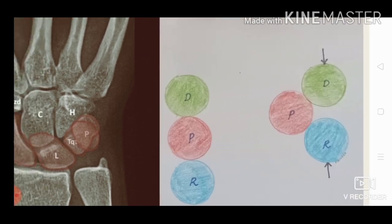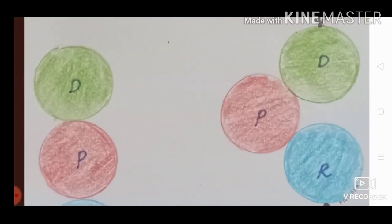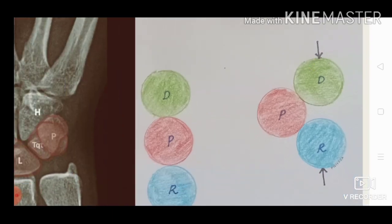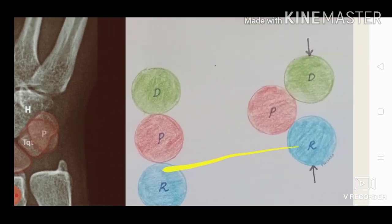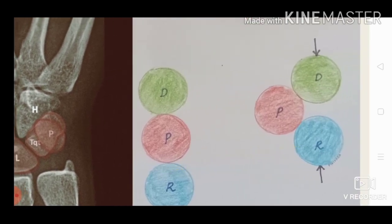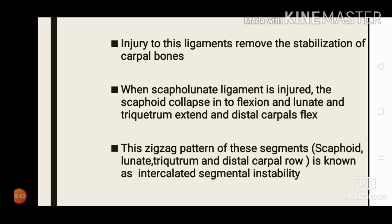In the next figure you can see three segments. When a compressive force acts on these three segments, the middle segment — the intercalated segment — moves in the opposite direction, while the first and third segments move in one direction. In the wrist, stabilization is provided by the ligaments, which prevent these unnecessary movements.